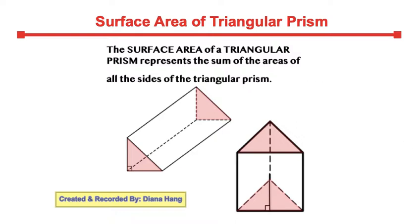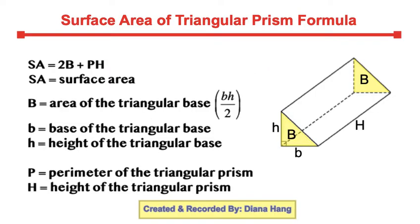Let's take a look at the formula. Our formula for the surface area of a triangular prism is SA equals 2 times capital B plus capital P times capital H.